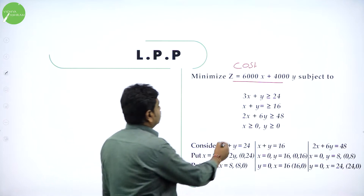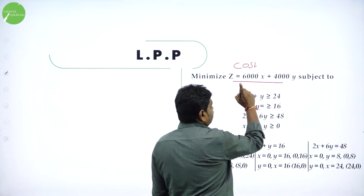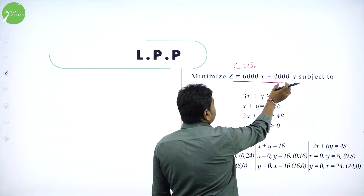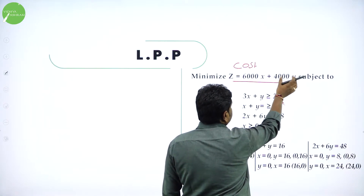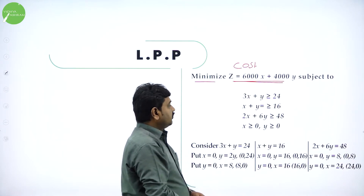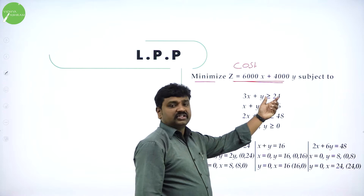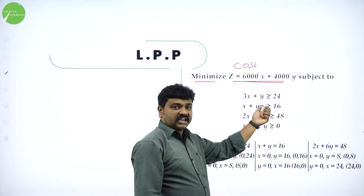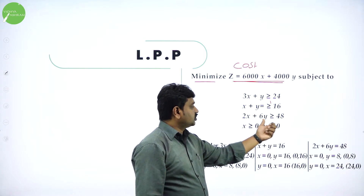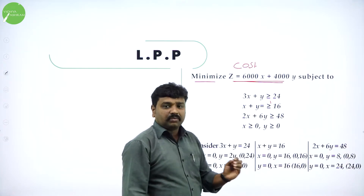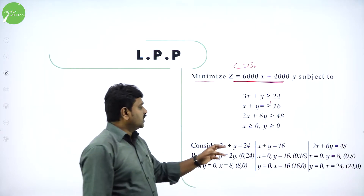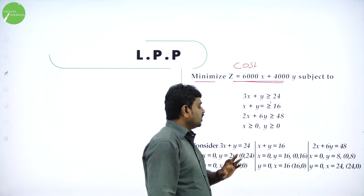So this is the full formulation. Minimize Z = 6,000X + 4,000Y, the total cost. Subject to: 3X + Y ≥ 24 for color, X + Y ≥ 16 for standard, 2X + 6Y ≥ 48 for economy. Since the number of units produced is always non-negative, X ≥ 0 and Y ≥ 0.